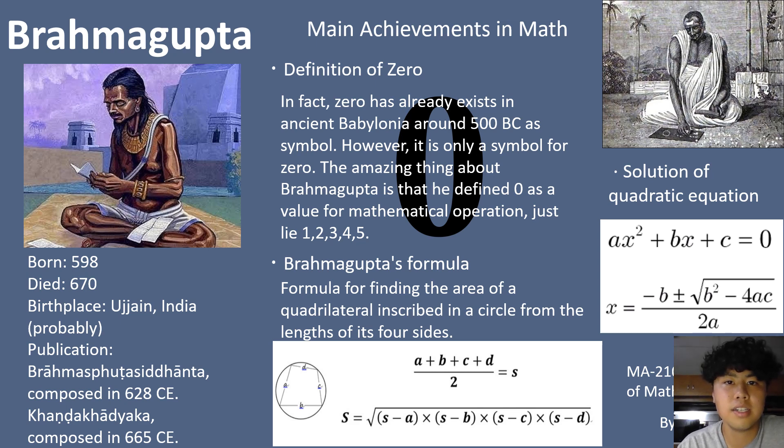In fact, zero has already existed in the ancient Babylonia around 500 BC as a symbol. However, it is only a symbol for zero. The amazing thing about Brahmagupta is that he defined zero as a value for mathematical operation, just like 1, 2, 3, 4, 5.